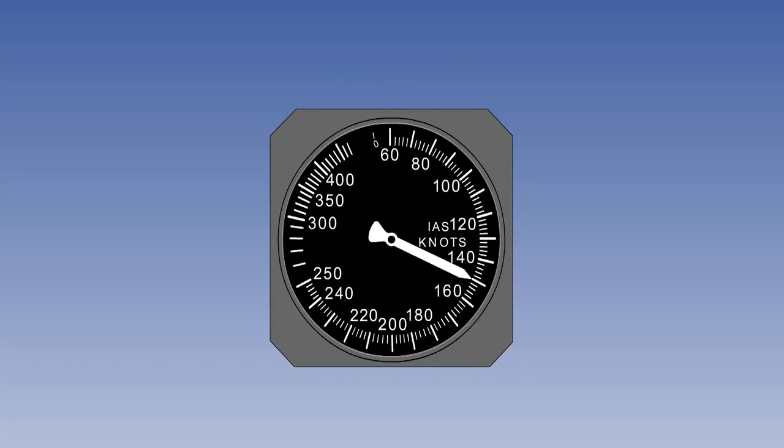There are, perhaps rather confusingly until you are familiar with them, several different categories of airspeed. The simplest is the indicated airspeed, IAS, which as its name implies, is the airspeed shown on the ASI.